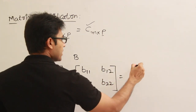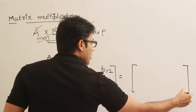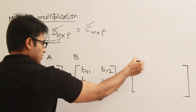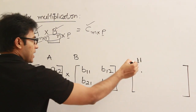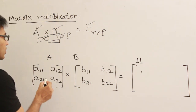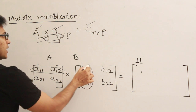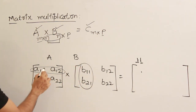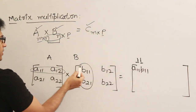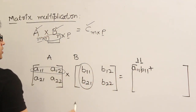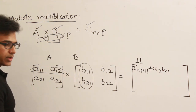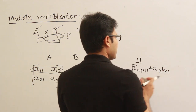If I multiply A and B, I get a new matrix C. To get the element at index 1,1: take the first row from A and the first column from B, multiply the corresponding elements and sum them up. So C11 equals A11·B11 plus A12·B21.